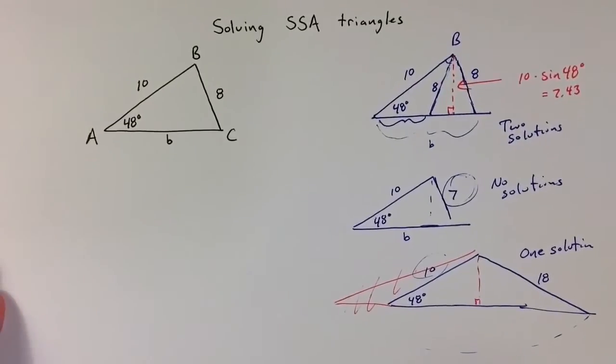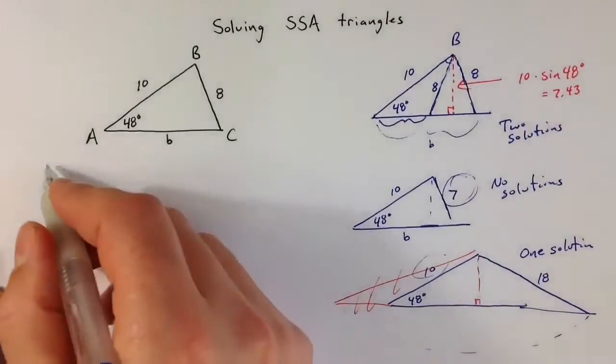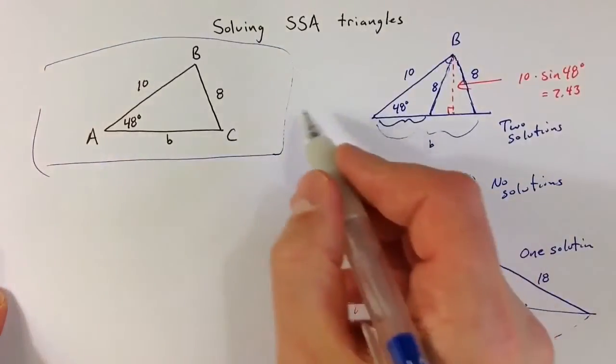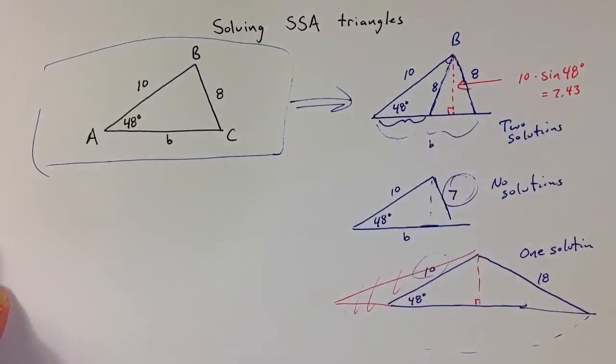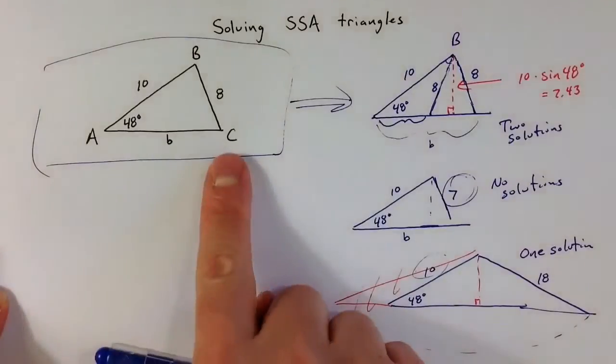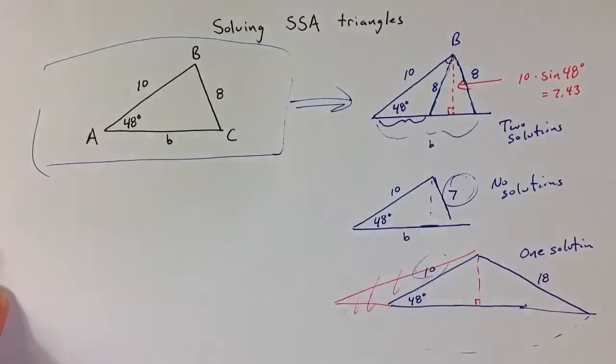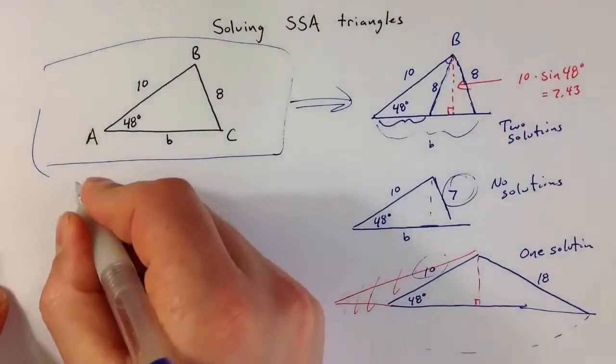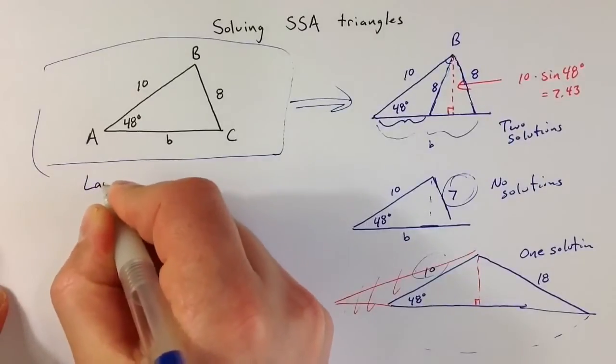So let's try to solve this given example. We know from the diagram that there are going to be two solutions. And to find those two solutions, we could either use the law of sines or the law of cosines. I'd like to use the law of cosines.